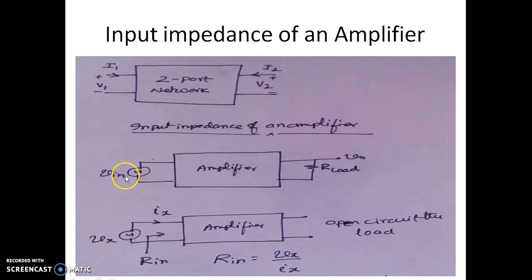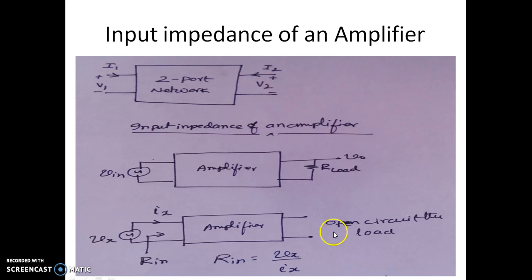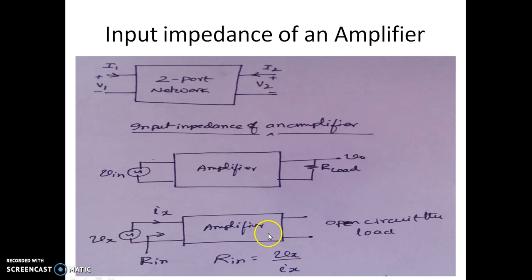Here we are considering the input source Vin as the small signal input, and there is a load resistor connected as RL where we take the output voltage. In order to find the input impedance, we should not have the influence of other circuits, so we open circuit the load. We apply a dummy source Vx and get the ratio Vx/Ix, which is the input impedance. The condition is that the output should be open circuited.